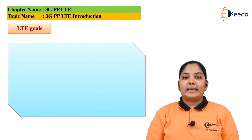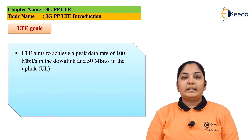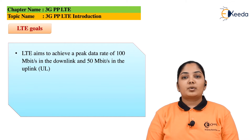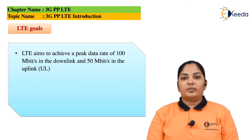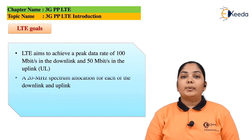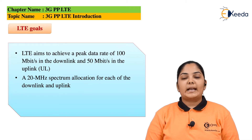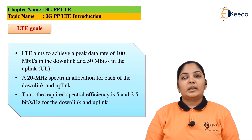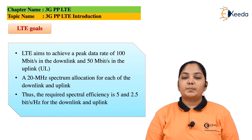Let us see what were the goals of the LTE system. LTE aims to achieve a peak data rate of 100 Mbps in the downlink and 50 Mbps in the uplink direction. It is always expected that the user is going to download more data than it is going to upload. A 20 MHz spectrum has been allocated for each user in downlink as well as uplink. Thus the required spectral efficiency is 5 and 2.5 bits per second per hertz for the downlink and uplink respectively.